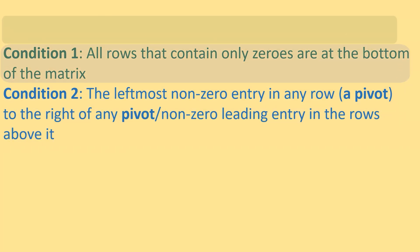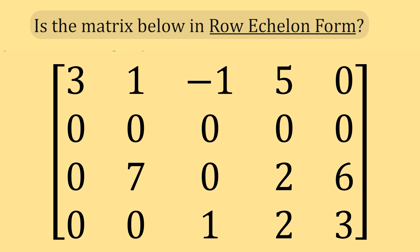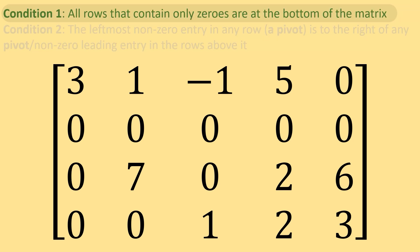Consider this matrix. Is it in row echelon form? Do we have any rows with all zeros? It looks like we have one here. Is it at the bottom of the matrix, below all of the other non-zero rows? No. So this matrix is not in row echelon form.